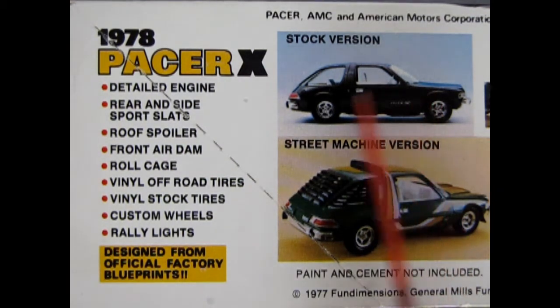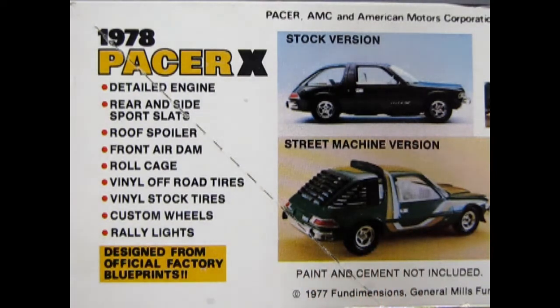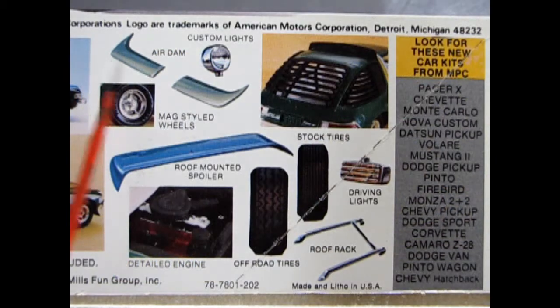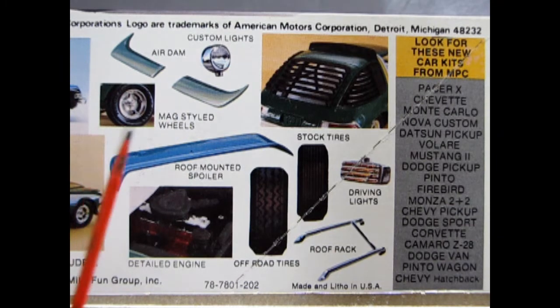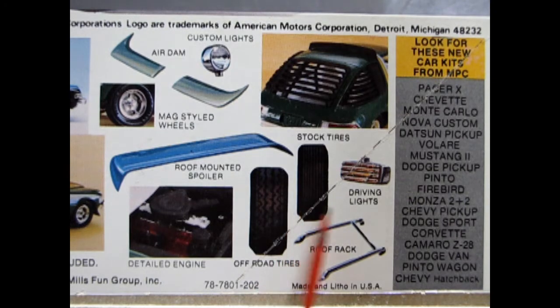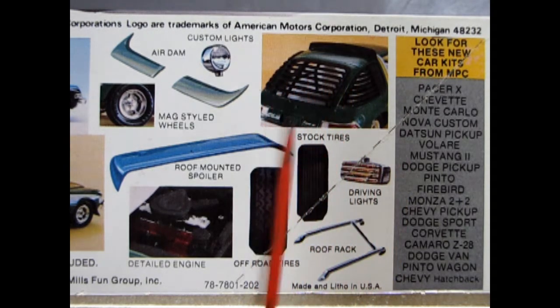Here we can see the stock version and down below is the street machine version. The model kit also includes air dams, custom lights, mag style wheels, roof mounted spoiler, detailed engine, off-road tires, roof rack, stock tires, driving lights and these nice window slats.